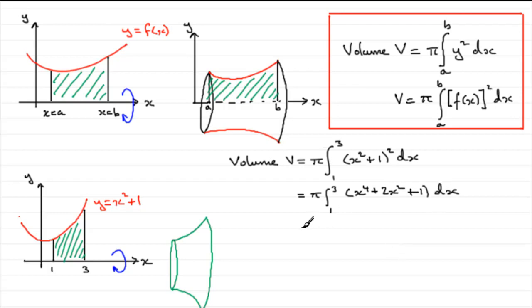So in the usual way, if we integrate this, integrate x to the 4, you've got x to the power 5 over 5. Then you've got plus 2x cubed over 3 plus an x. And the limits are from 1 to 3.